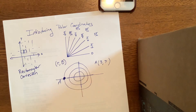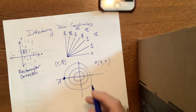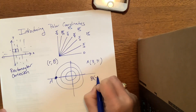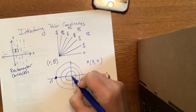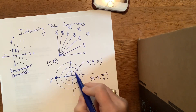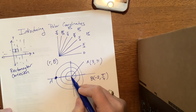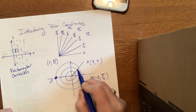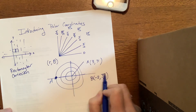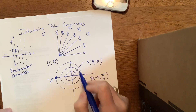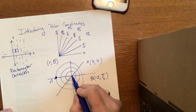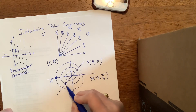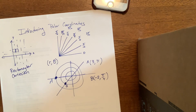Let's say point B is (-2, π/4). Find π/4 — it's right here. Normally you'd move in the positive direction for the radius, but this is a negative radius, so you have to turn around and go the opposite direction. So negative 1, negative 2 — and there is point B at (-2, π/4).